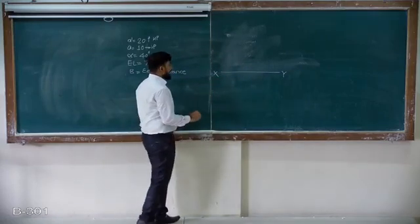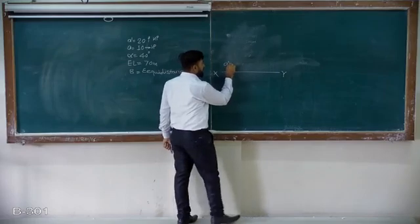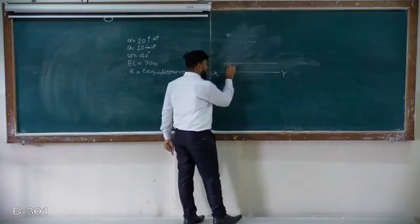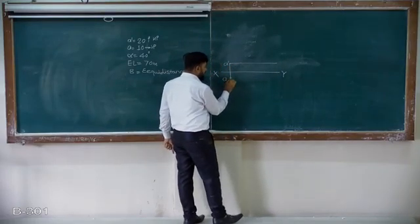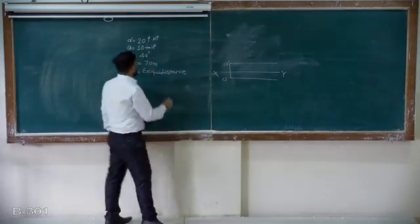What is given? A dash is 20mm, so I will mark a dash at 20mm above XY line because it is above HP. Point A is 10mm from VP, so this is 10mm below XY.